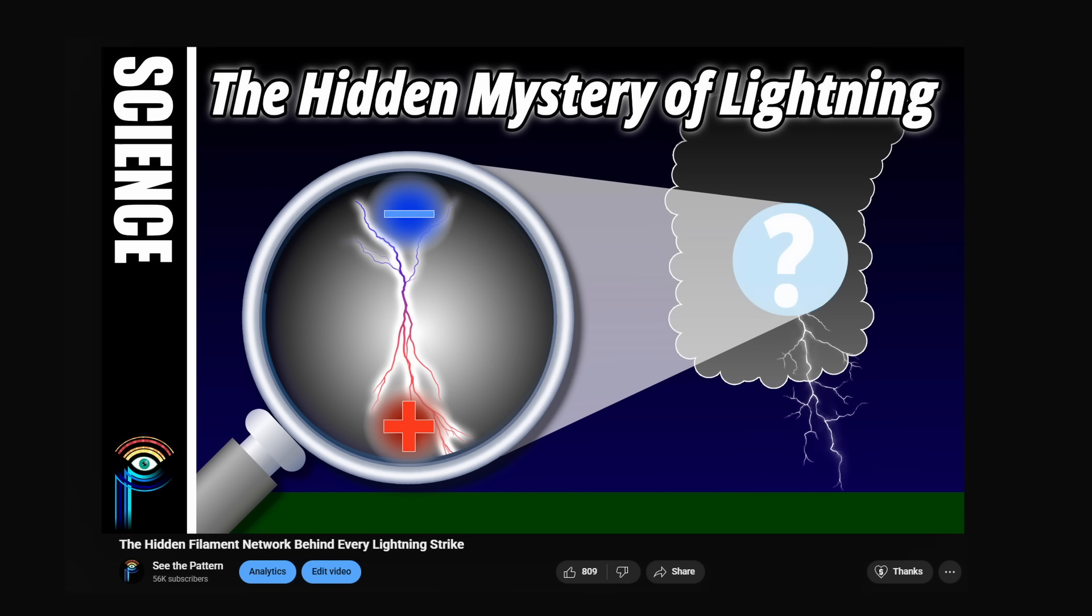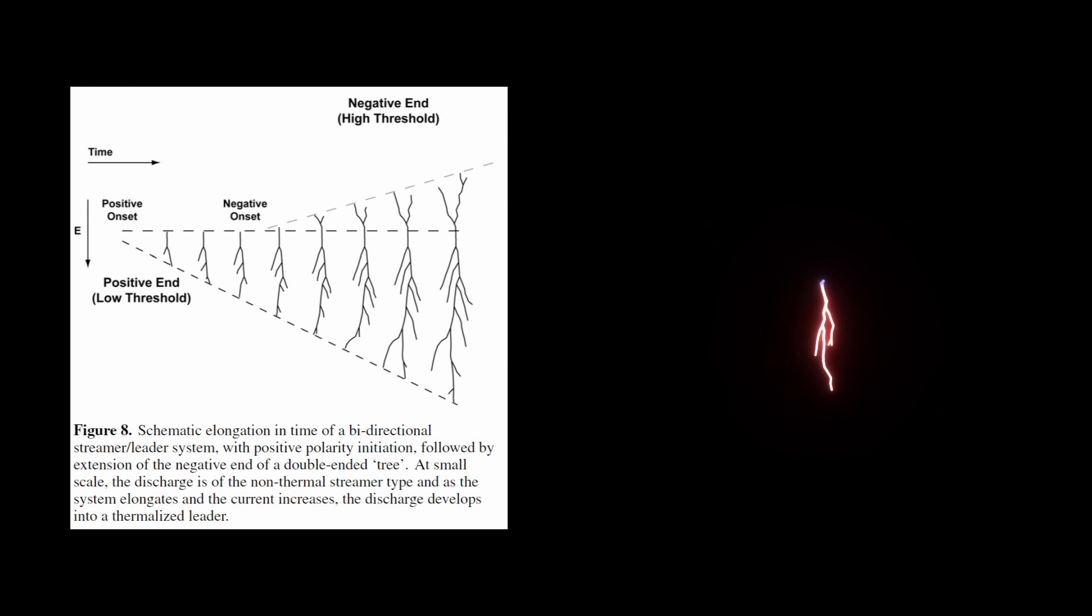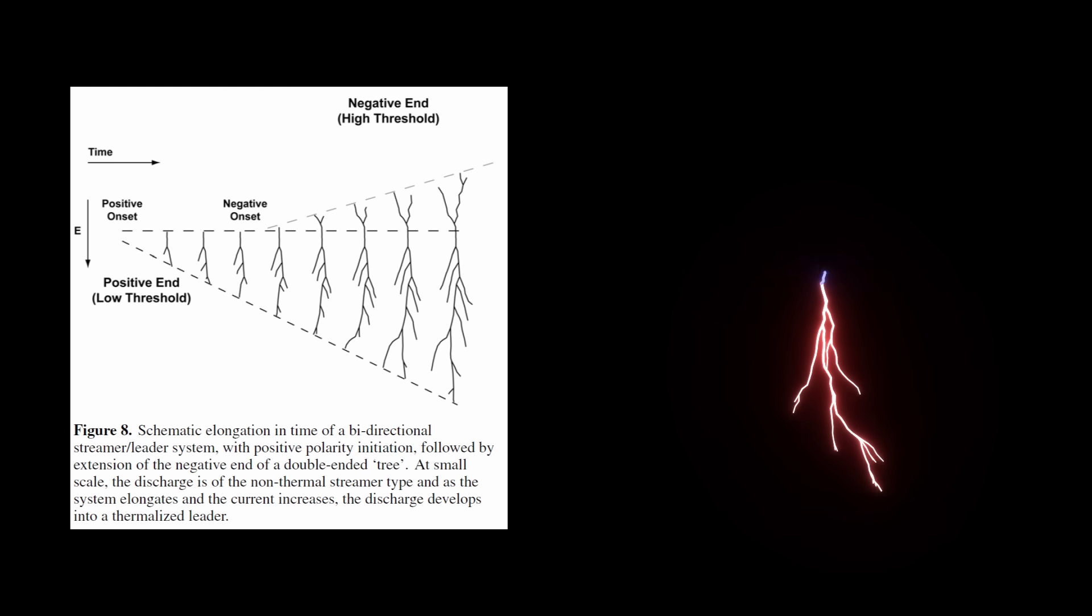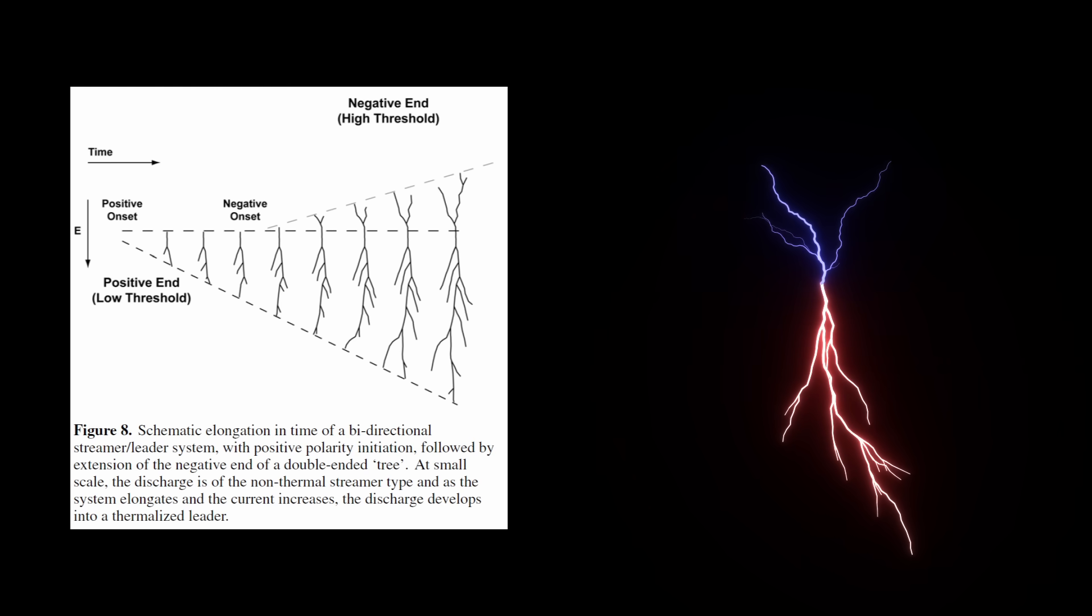I explored this asymmetric behavior of lightning in much more detail in a previous video. If you'd like to understand the physics behind it more fully, I've linked the video in the description below. But the key idea here is that the process is not simply one-directional. It's a dynamic network of pathways growing from opposite ends and seeking each other out across a gap of neutral air.